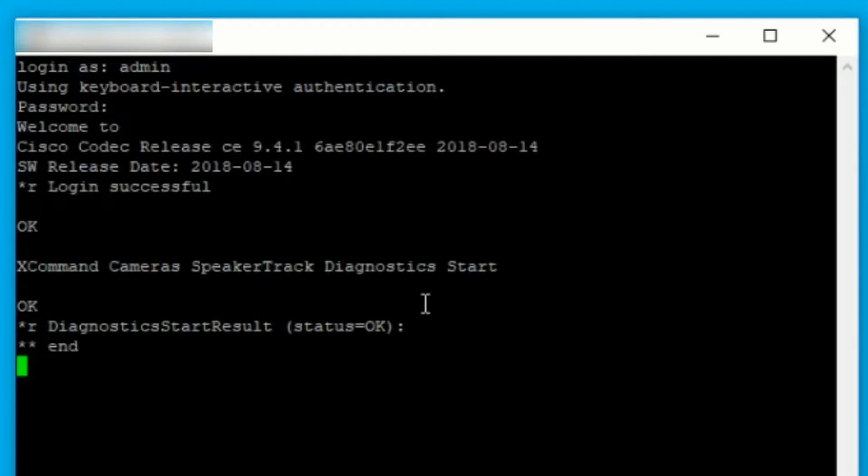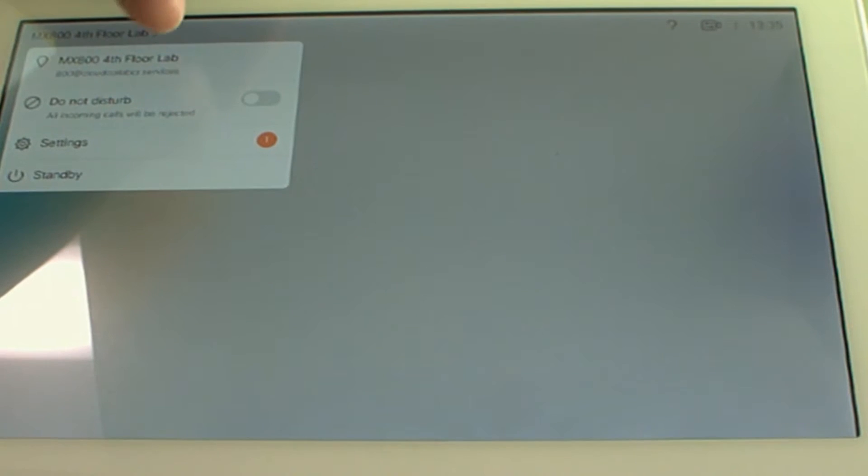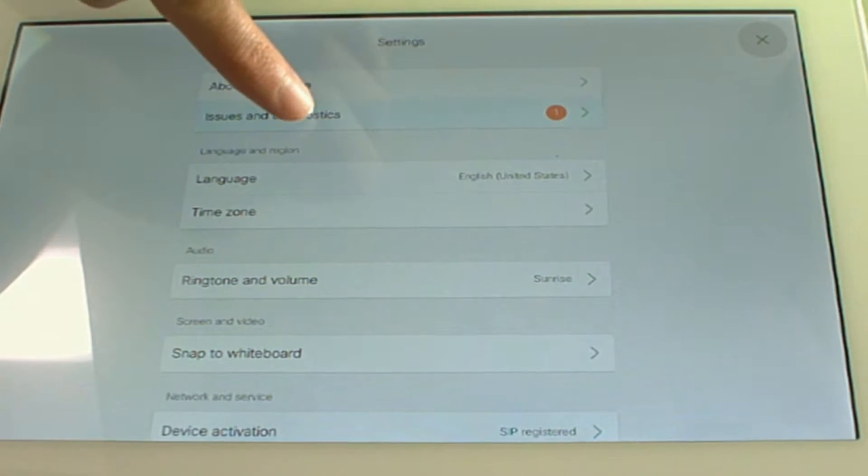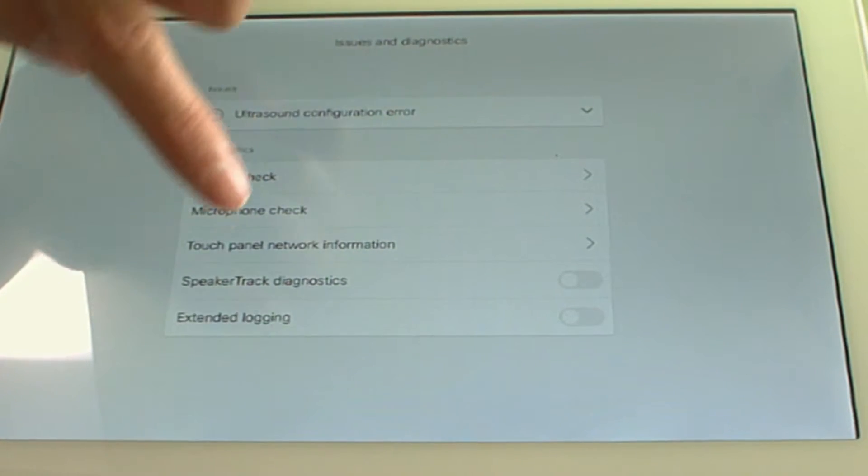To disable it, just run the same command but stop at the end. This can also be done on the Touch 10 by going to Settings, Issues and Diagnostics, and enabling SpeakerTrack Diagnostics. To disable the diagnostics, just use the same button.